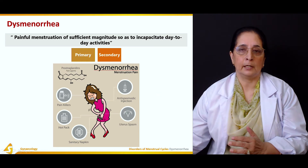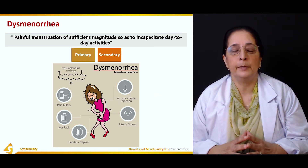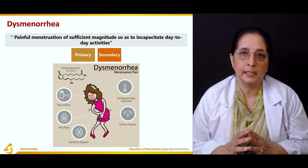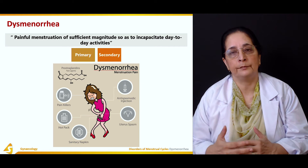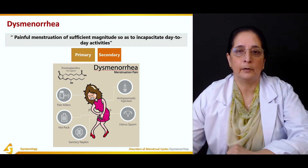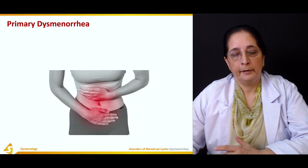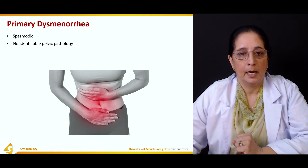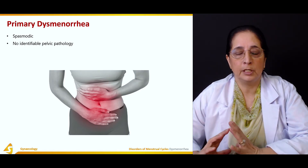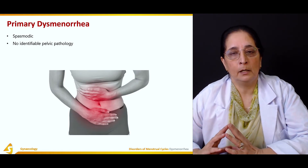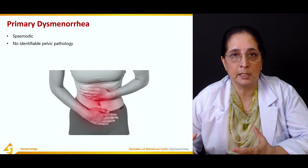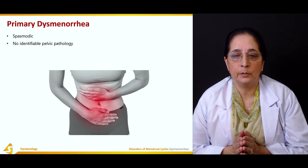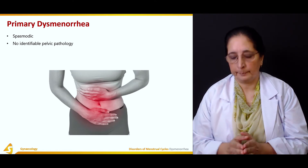In clinical practice, patients with really bad dysmenorrhea often need injections within the first 48 hours after the beginning of the cycle to get relief from that pain. Primary dysmenorrhea is a spasmodic type due to contraction of the muscles, and there is no identifiable pelvic pathology — no fibroids or endometriosis, which are causes of secondary dysmenorrhea. So in primary dysmenorrhea, there is usually no underlying pelvic pathology present.